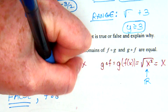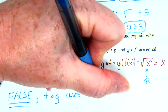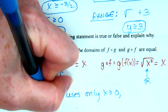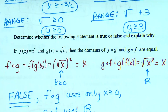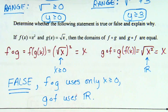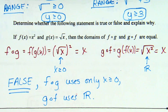You have to backtrack to where the equations came from before simplifying. In fog, before squaring, you had a radical — g of x — which requires x greater than or equal to zero. In gof, whatever you put in for x gets squared first, becoming positive, before taking the square root, so the domain is all reals. Fog uses only x greater than or equal to zero; gof uses all reals. So the statement is false. When we're talking about functions, functions use only real numbers — we don't talk about imaginary portions.